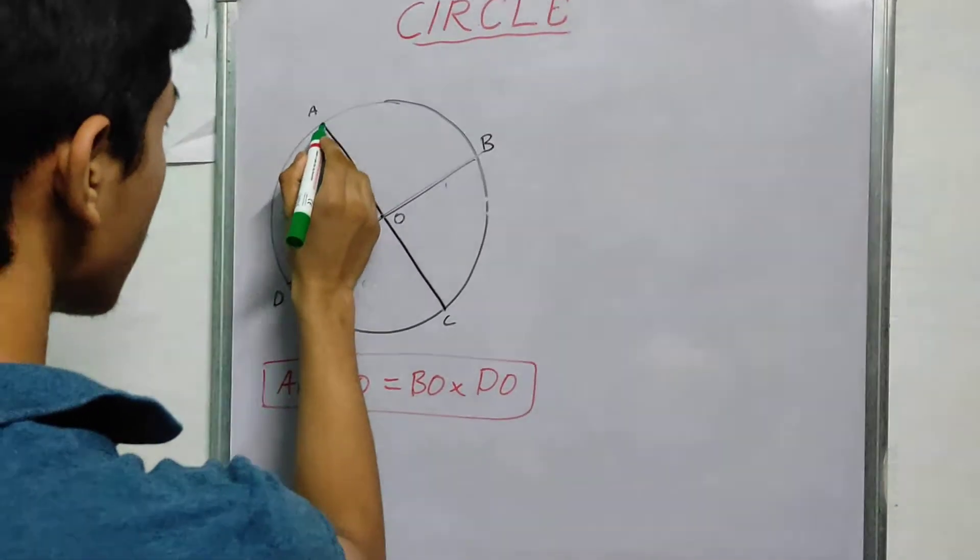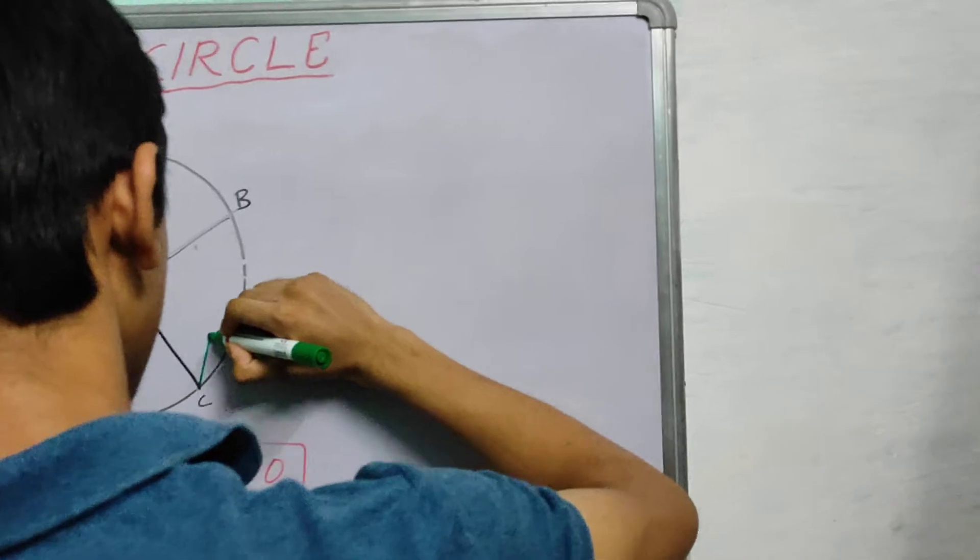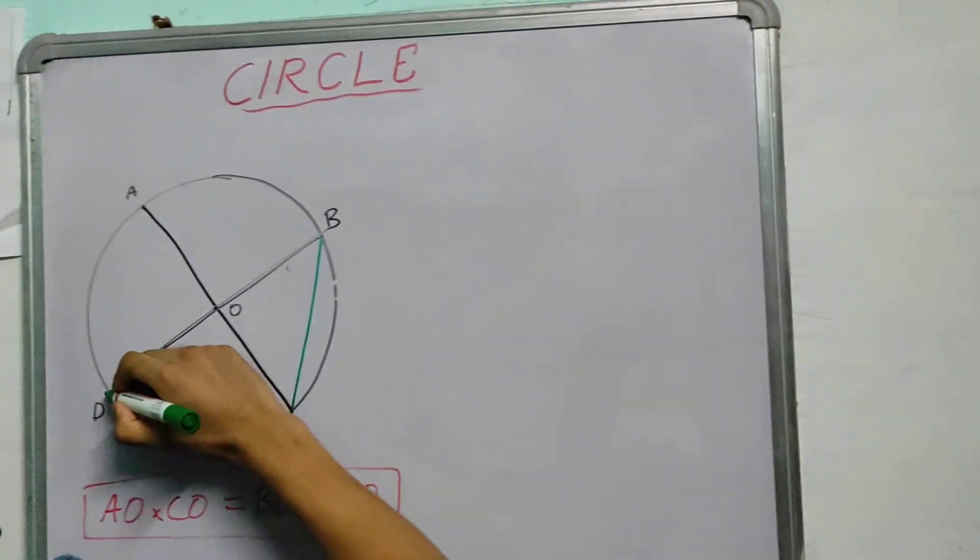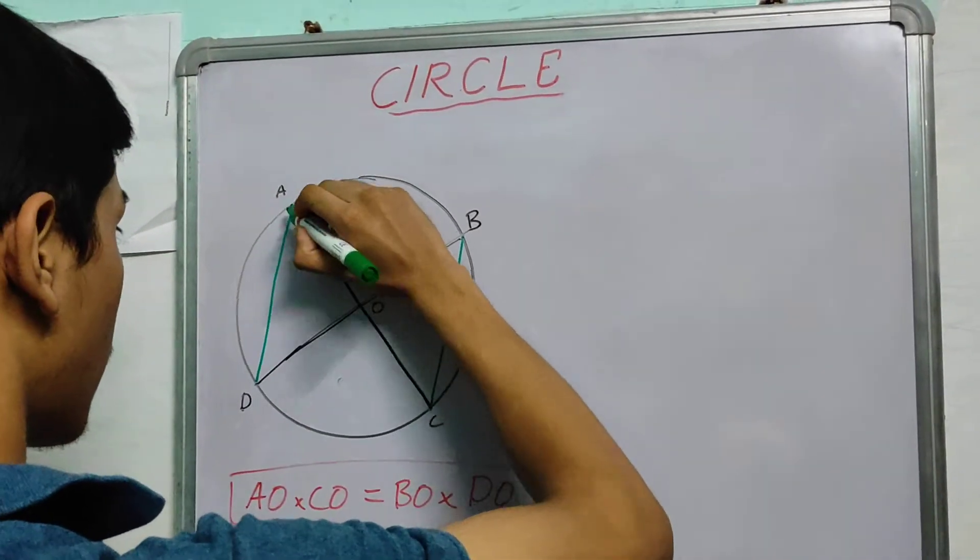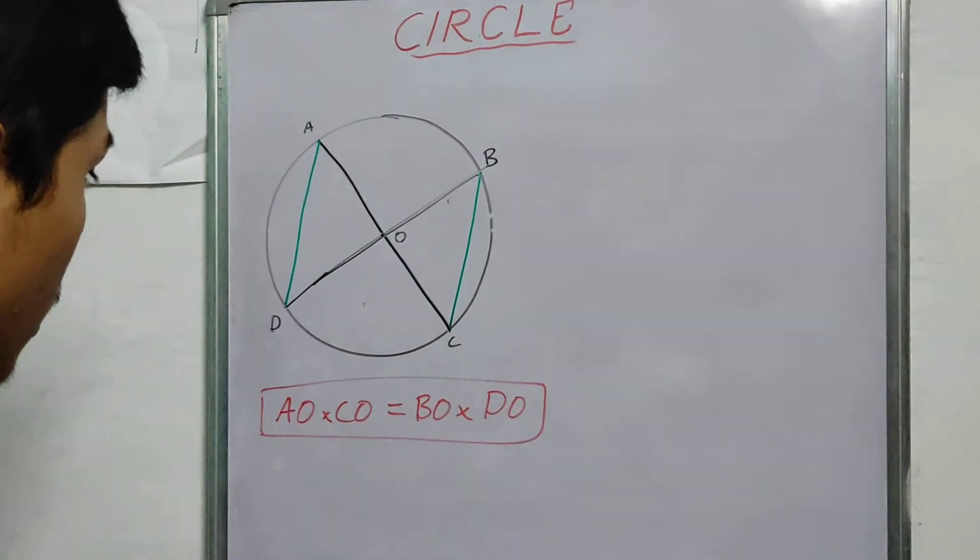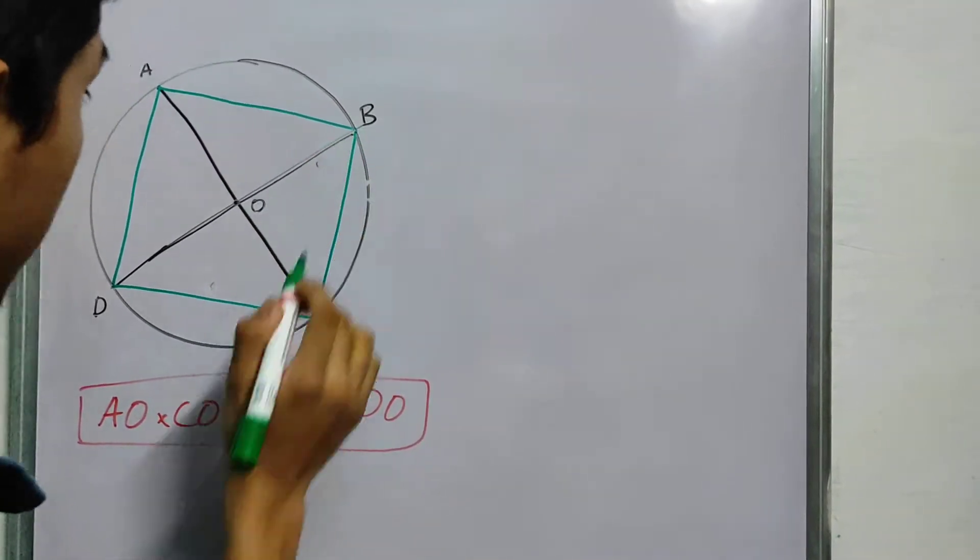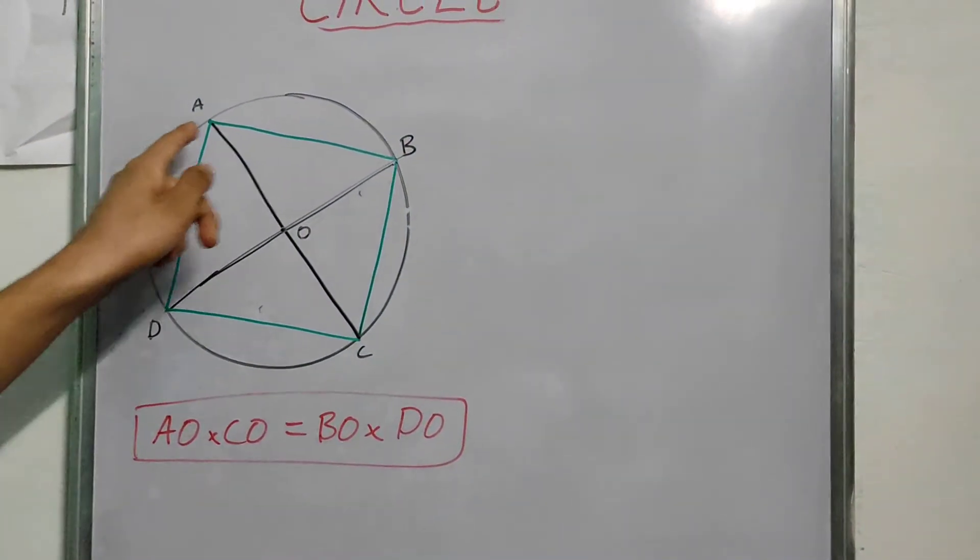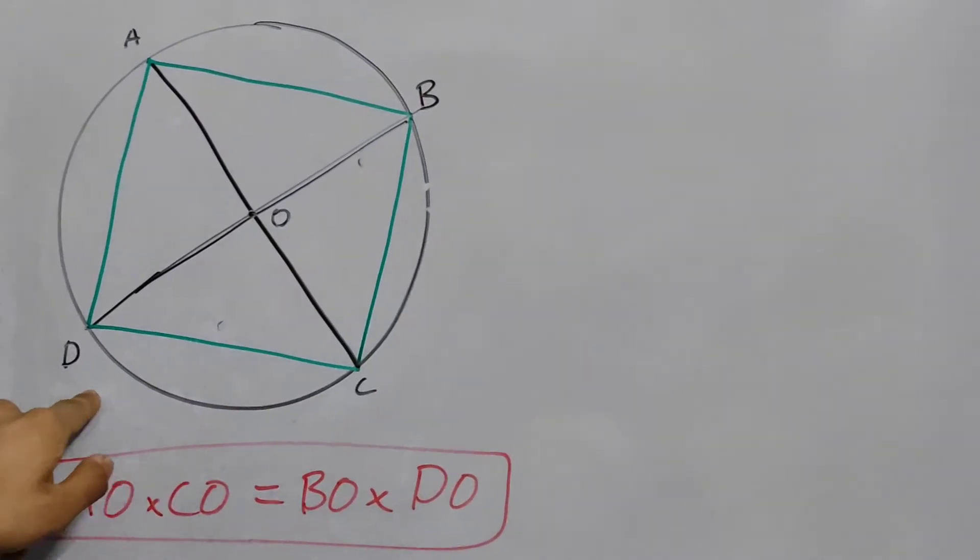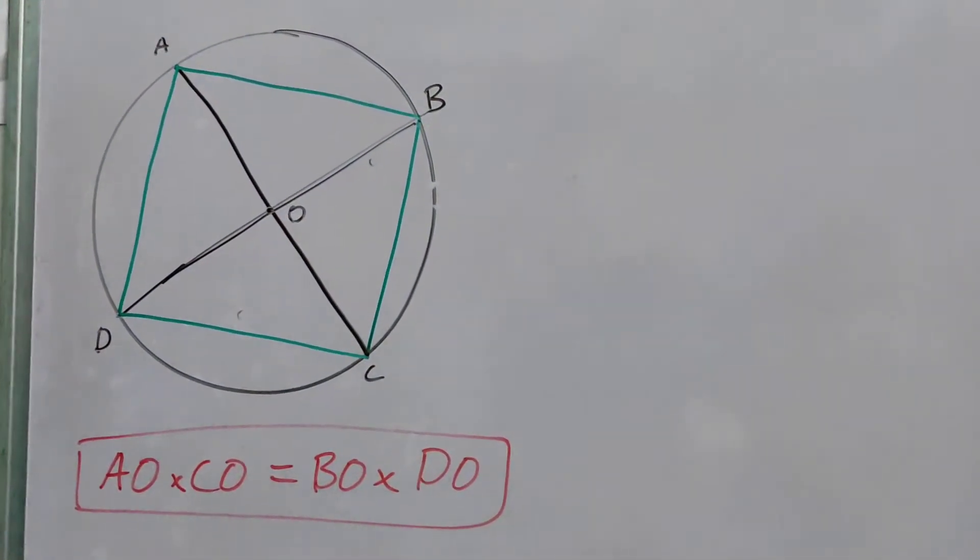What I will do is I will join these two lines, BC and AD. You can also draw DC and AB. Now A, B, C, D is a cyclic quadrilateral, all the four points lay on the circumference.